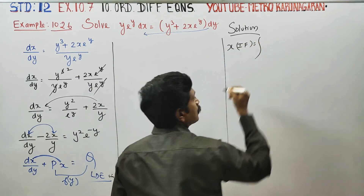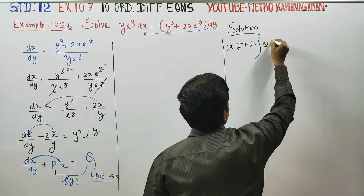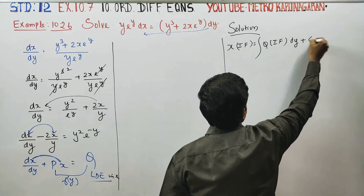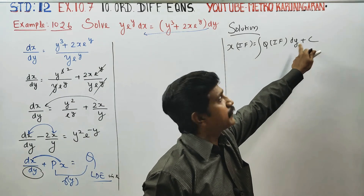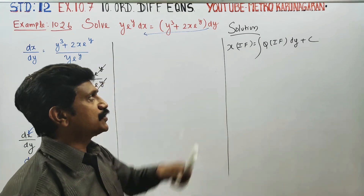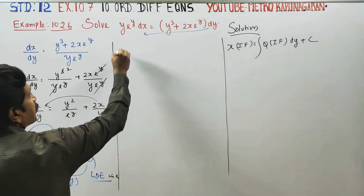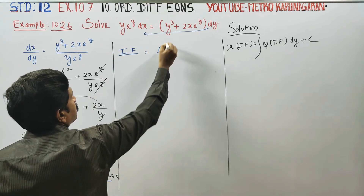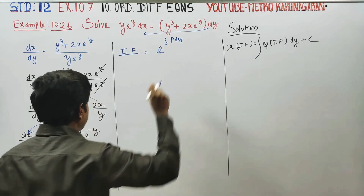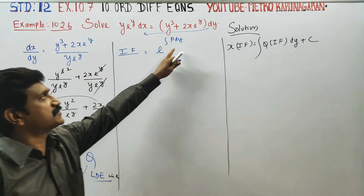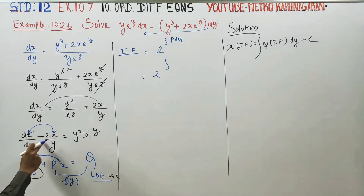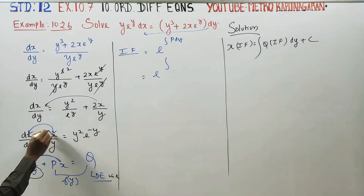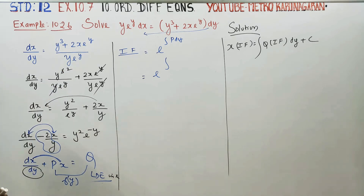The solution formula is: x · (Integrating Factor) = integral of Q · (Integrating Factor) dy + C. The Integrating Factor formula is e^(∫P dy), because the denominator is dy. Here P = -2/y.